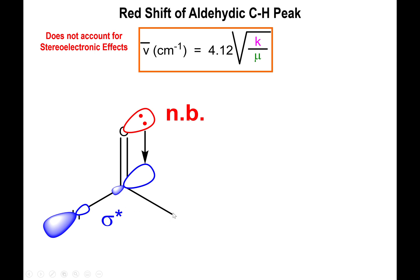This should not be confused with C-H bonds farther away from the carbonyl carbon — those still absorb slightly below 3000, or above 3000 if they are alkene C-H bonds. It's specifically the C-H bond directly bound to the carbonyl carbon that appears between 2600 and 2800.